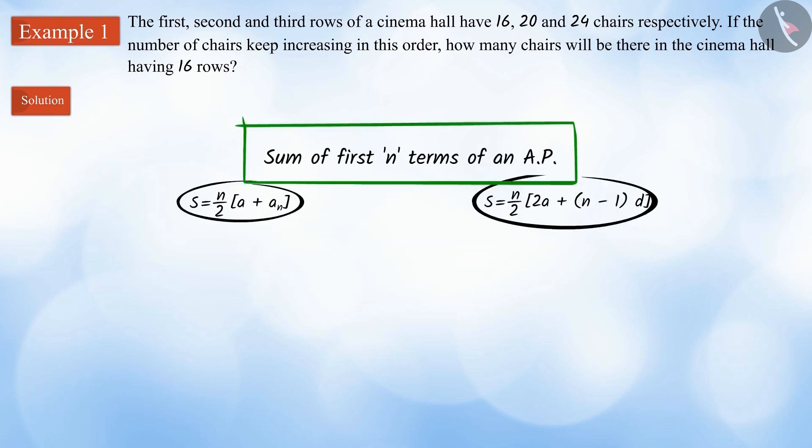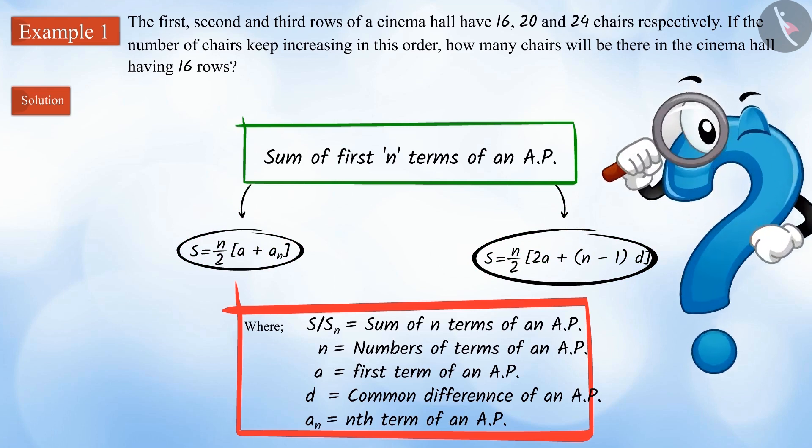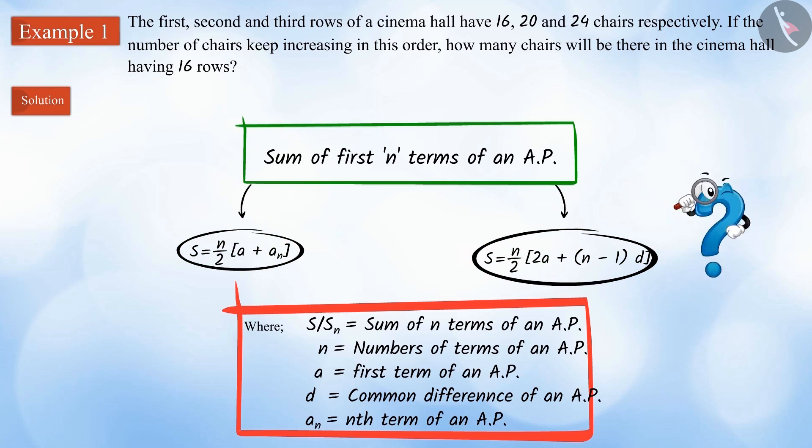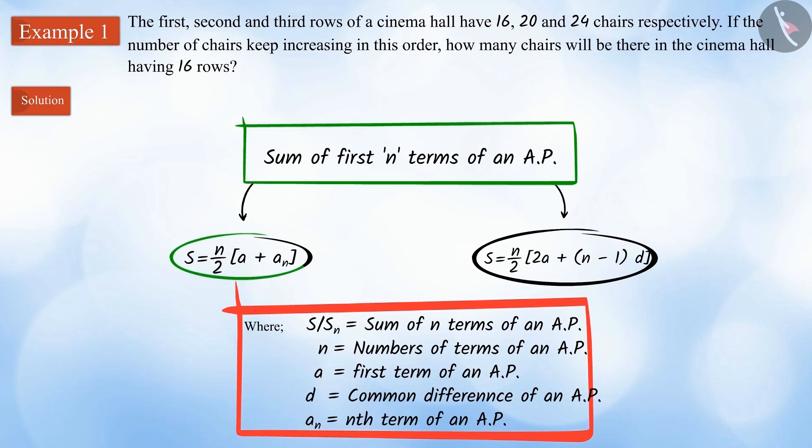We saw in the last video about how we can find the sum of the first n terms of the arithmetic progression with the help of two formulas. Can you tell which formula we should use here? Because we know the number of terms and the common difference, we will use this formula here. If we knew the nth term of an arithmetic progression, then we could use the second formula.